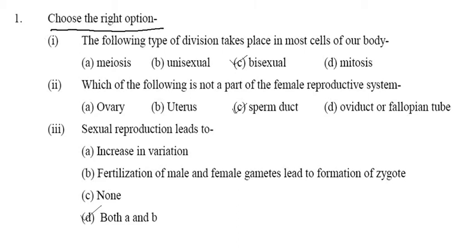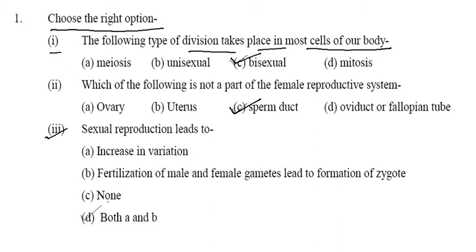Choose the right option. First: the following type of division takes place in most cells of our body — that is mitosis (bisexual). Second: which of the following is not part of the female reproductive system? Ovary, uterus, and sperm duct — sperm duct is found in a male. Third: sexual reproduction leads to both A and B — increase in variation, and fertilization of male and female gametes leads to formation of a zygote. The answer is A and B.